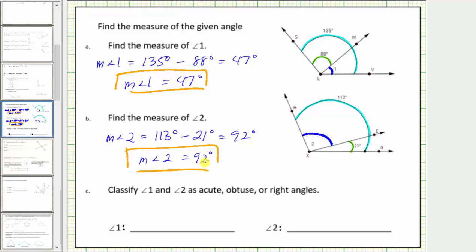Now for part C, we're asked to classify angle one and angle two as acute, obtuse, or right. The measure of angle one is 47 degrees. Because 47 degrees is greater than zero degrees and less than 90 degrees, angle one is an acute angle.